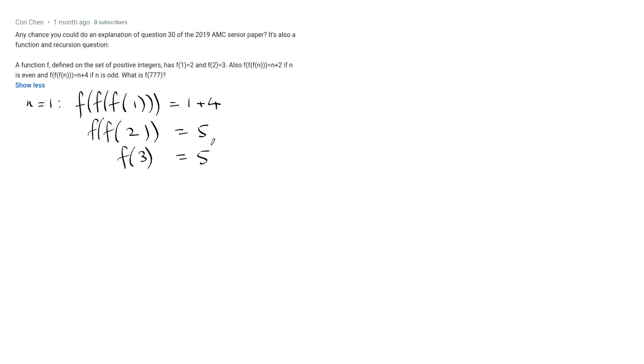Okay, so that's good. We've got some information out of that. And then maybe let's try n equals 2. So f of f of f of 2, now n is even so we use this rule, so 2 plus 2, and we know f of 2 is 3 and f of 3 is 5, so this just becomes f of 5 and that equals 4.